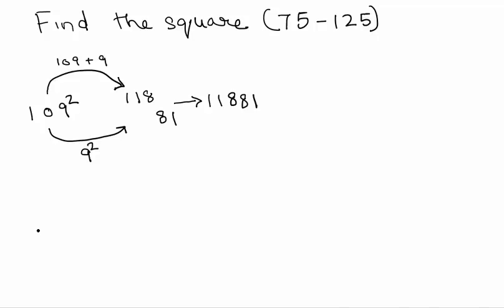Let's take another example. Say we take 117 square. So, now, 117 minus 100 is 17. So, we just take the number, add 17 to it. What do we get is 134.